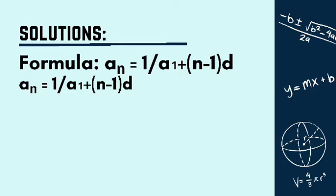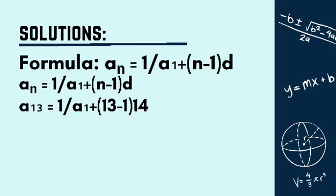I will be using a₁₃ for us to solve for the first term. So, a₁₃ = 1/(a₁ + (13-1)14). Since we have a given value on a₁₃, we will just substitute it. And we will subtract the two numbers in parentheses. So, 1/181 = 1/(a₁ + 12×14).